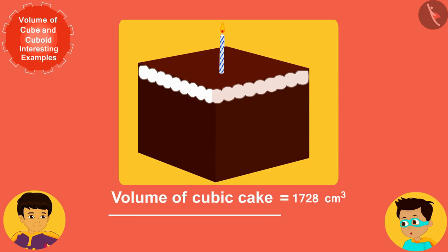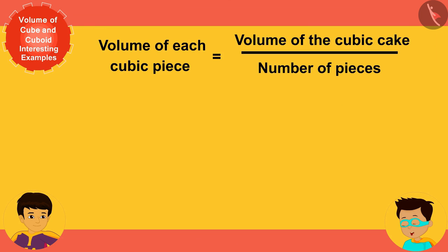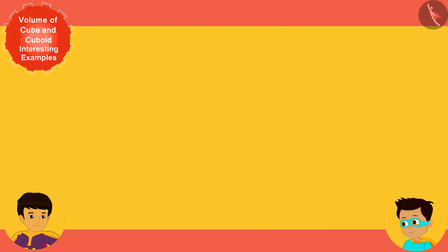Now, if we divide the total volume of this cake by the total number of pieces, 8, we will know the volume of each cubic piece. Look, the volume of each smaller cube cake is 216 centimeters cubed.